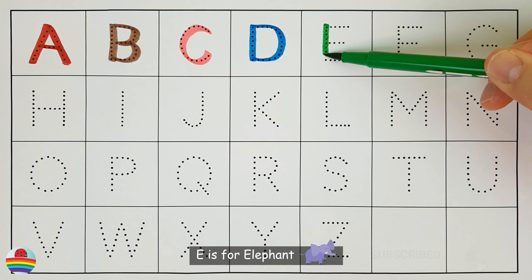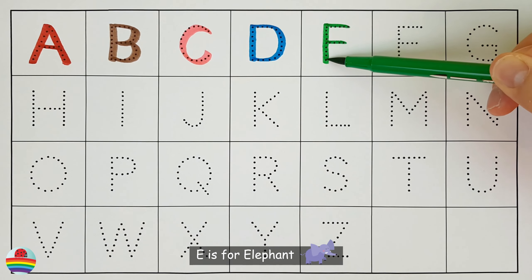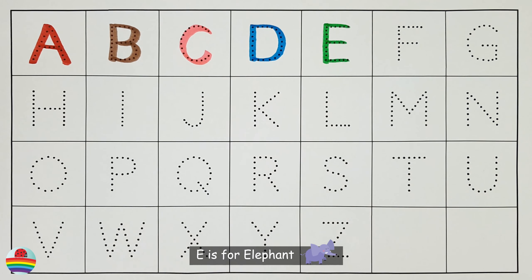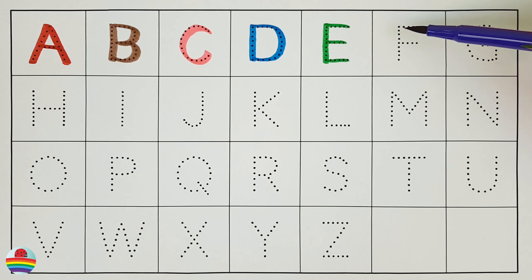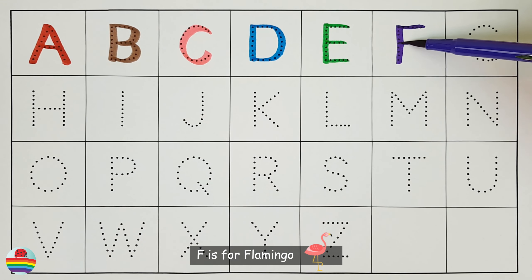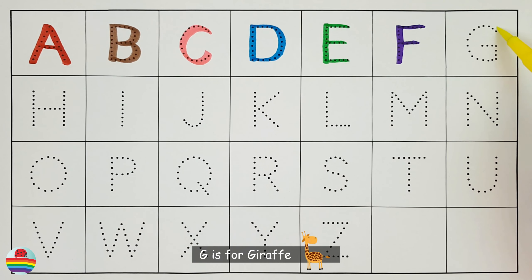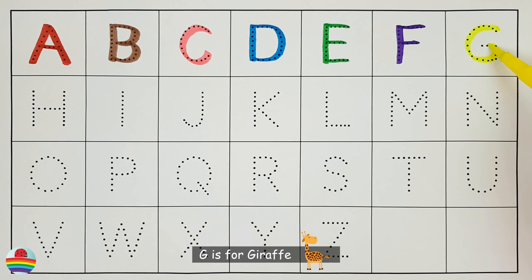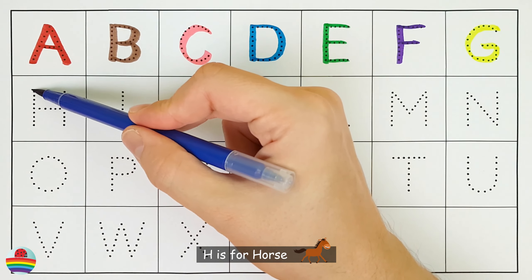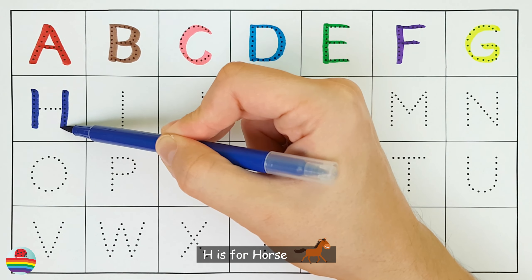E is for elephant. F is for flamingo. G is for giraffe. H is for horse.